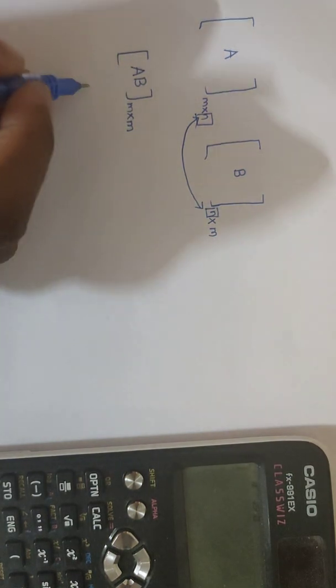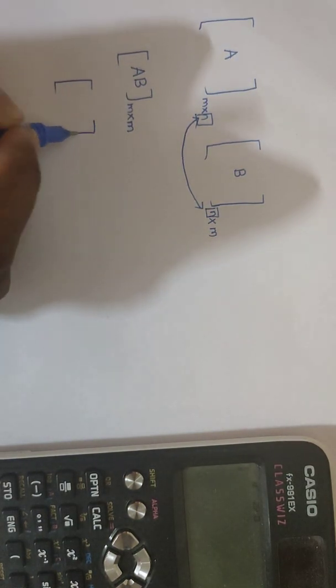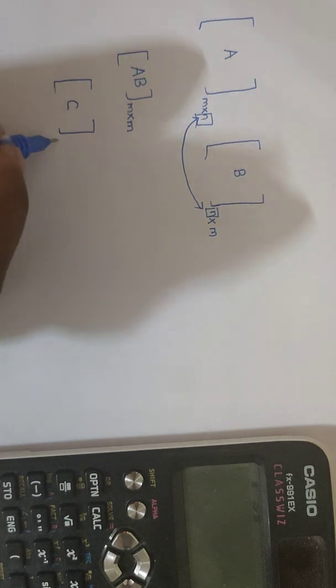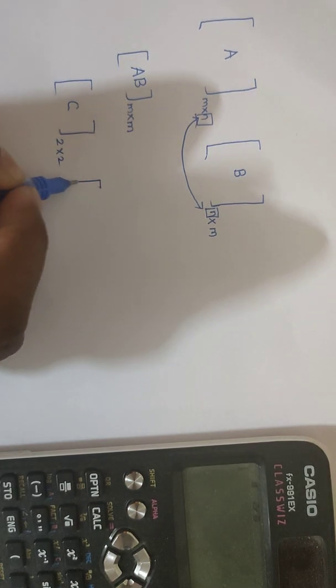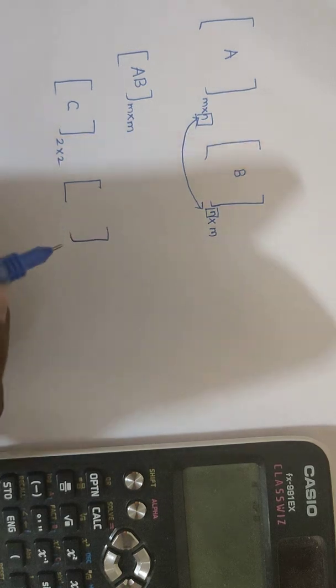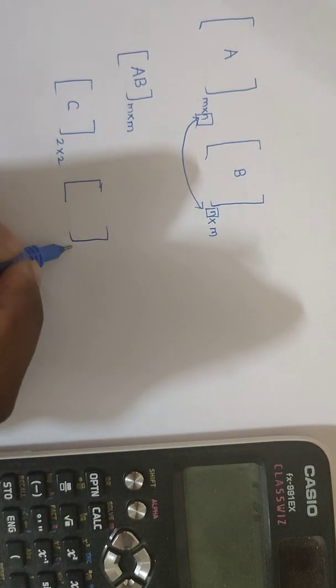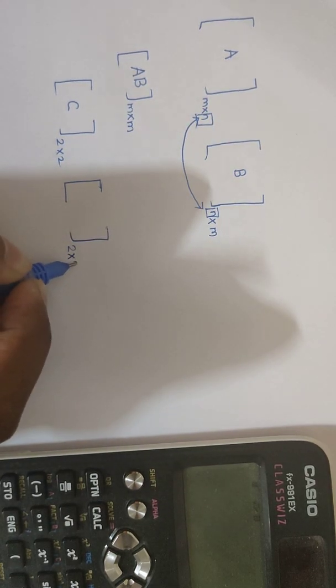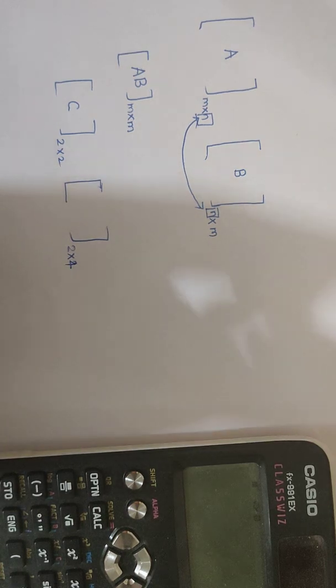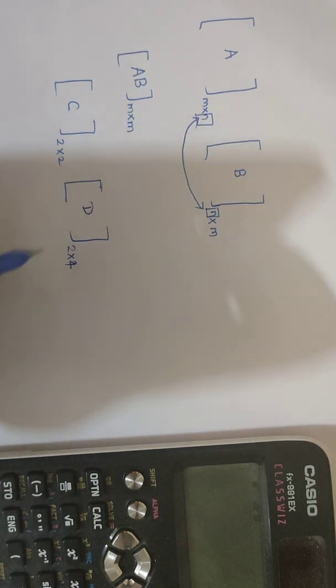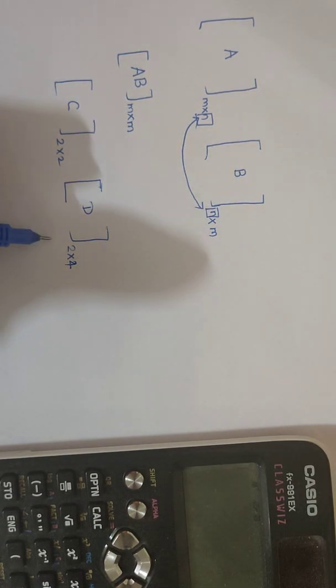If you are not able to get this, let us make it easy by taking matrix C whose order is 2 by 2, and let us take a matrix D whose order is, say, 2 by 3 or 2 by 4. So can you tell me that matrix multiplication is possible or not?